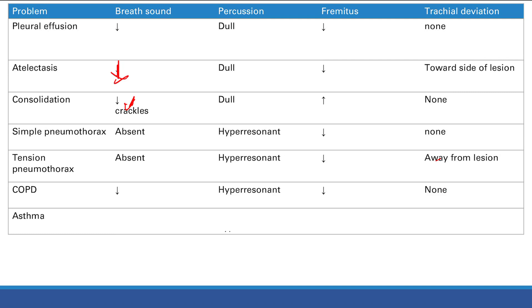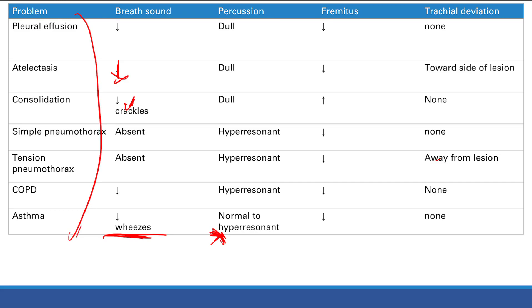Asthma, another obstructive disease: if the patient is not having an attack, they may have a normal exam. However, during an asthma attack — with bronchial hyper-responsiveness causing reversible bronchoconstriction — you get decreased breath sounds and wheezing. Percussion: air trapping from bronchoconstriction can make it hyper-resonant or normal. Fremitus: air in the lungs causes decreased fremitus. No tracheal deviation.